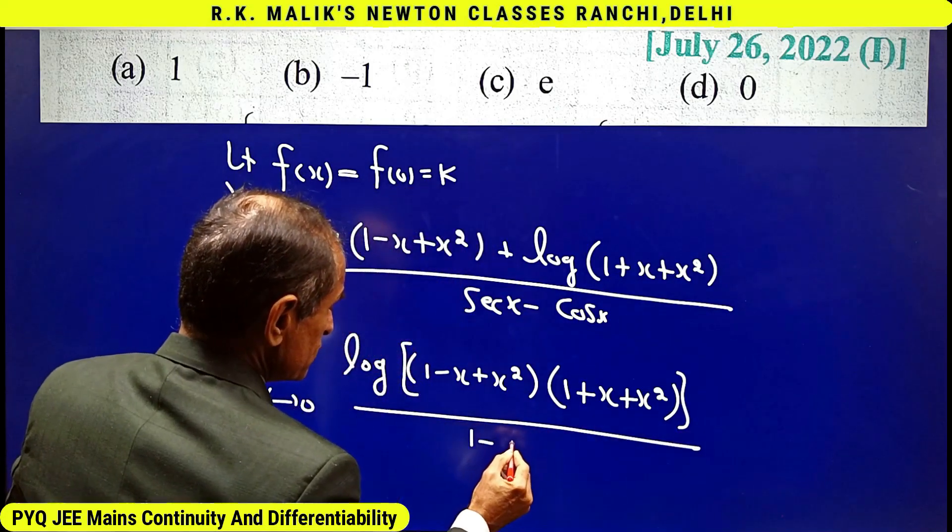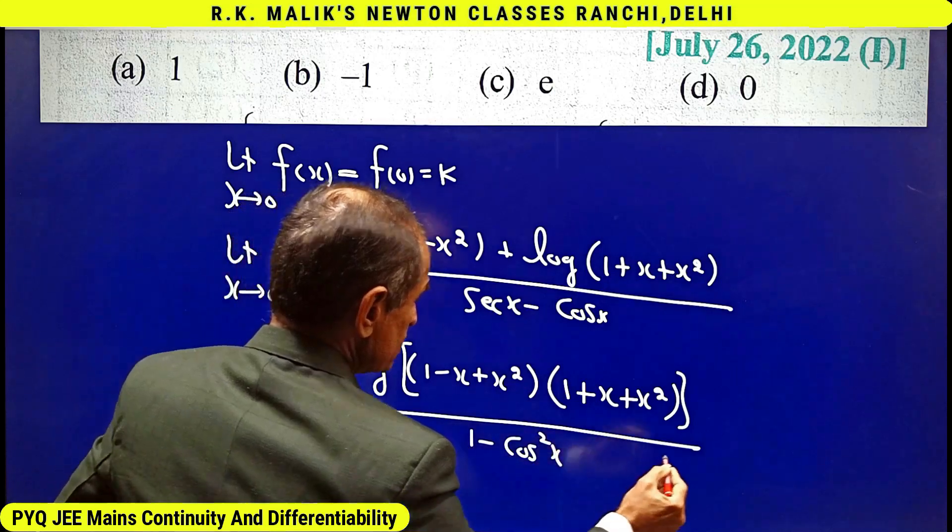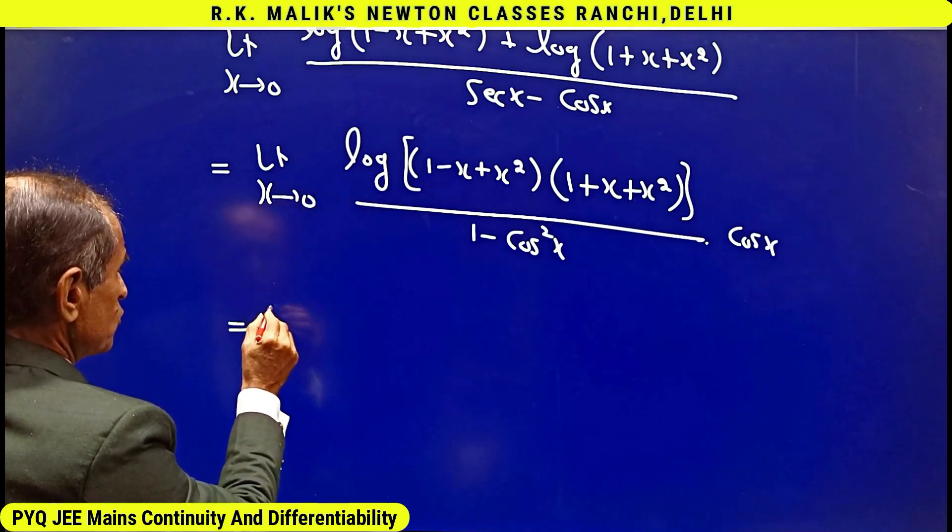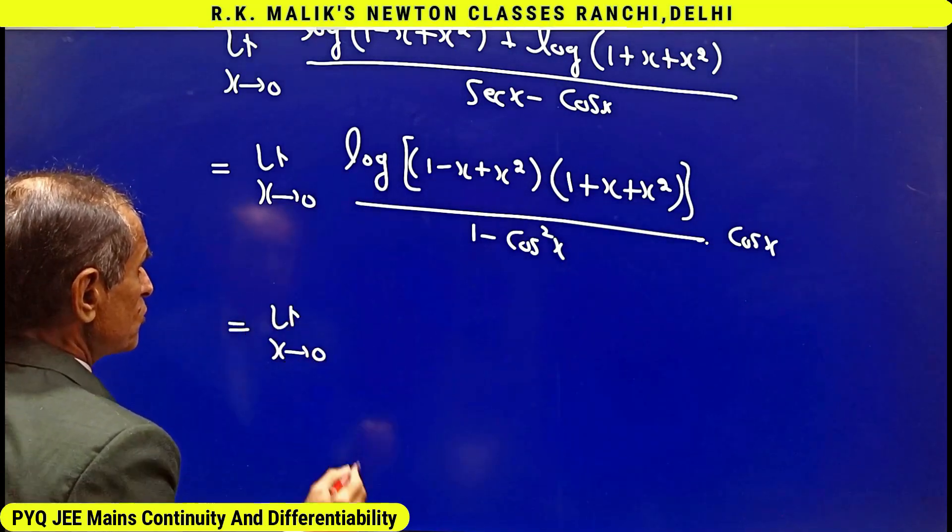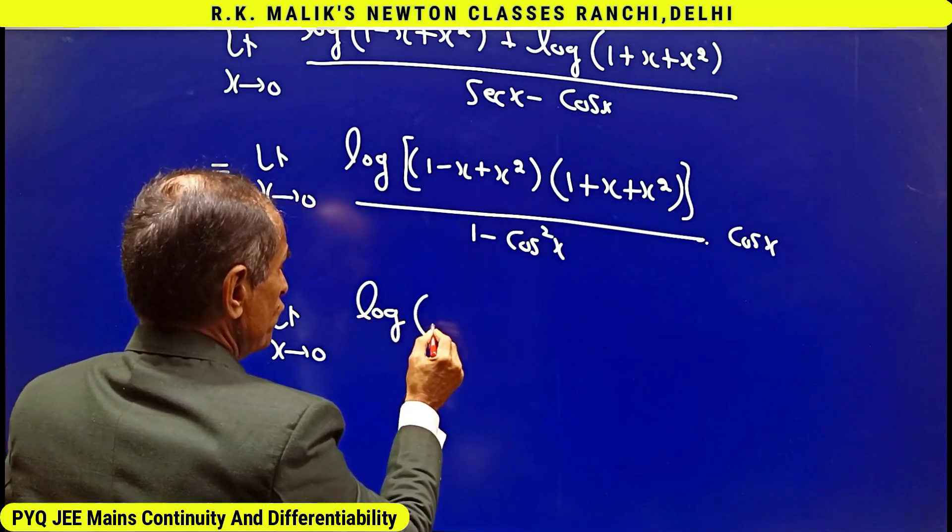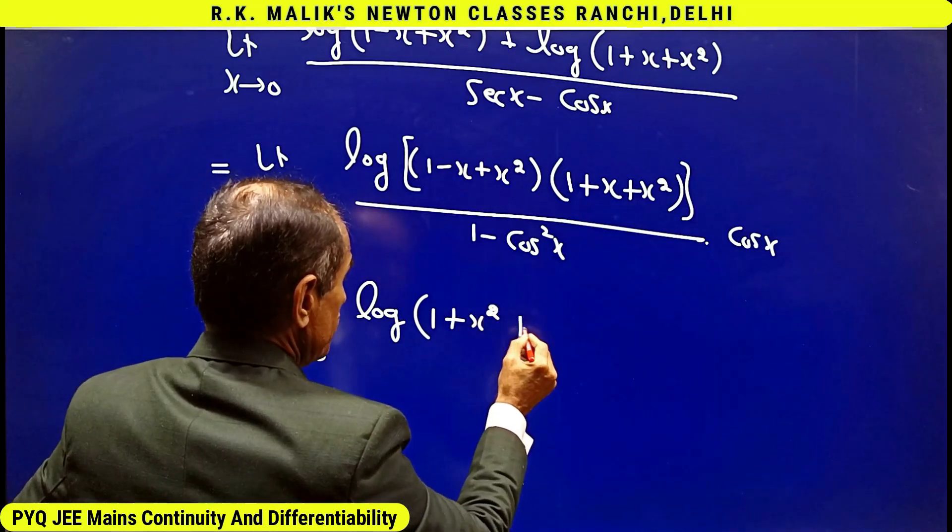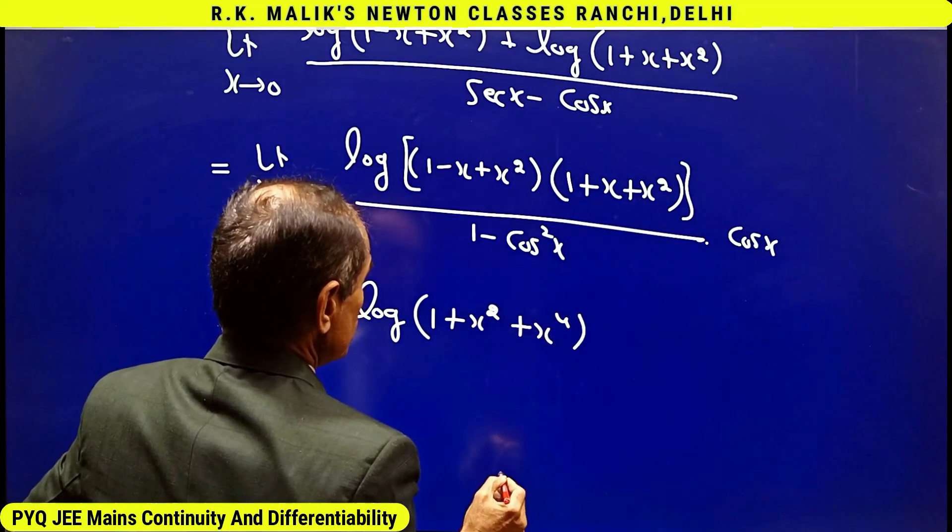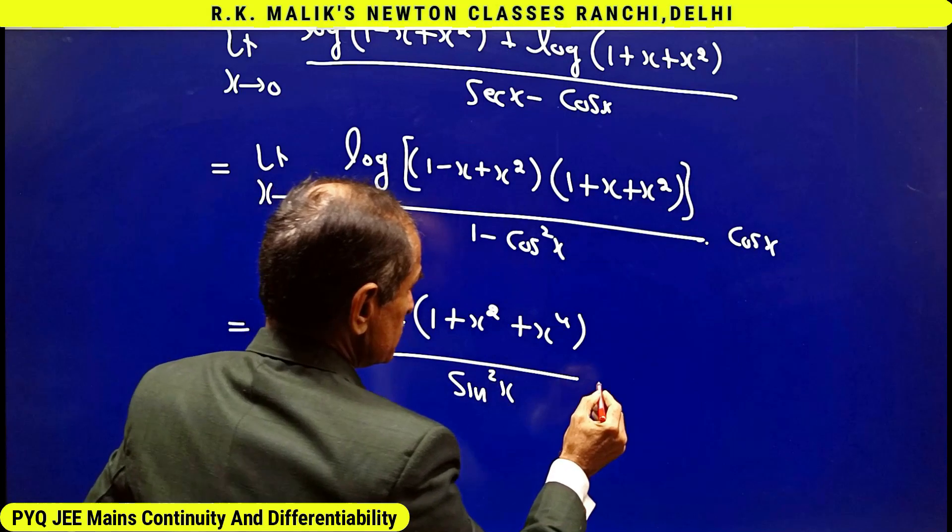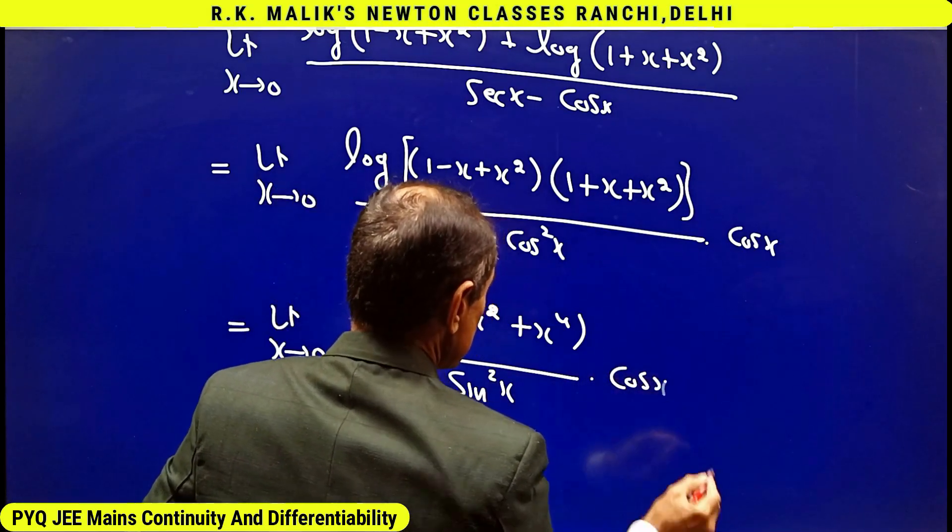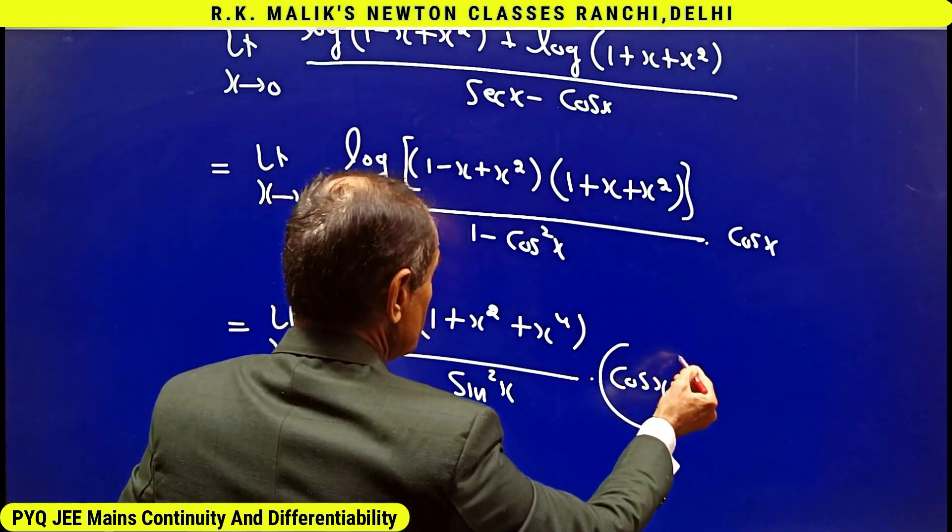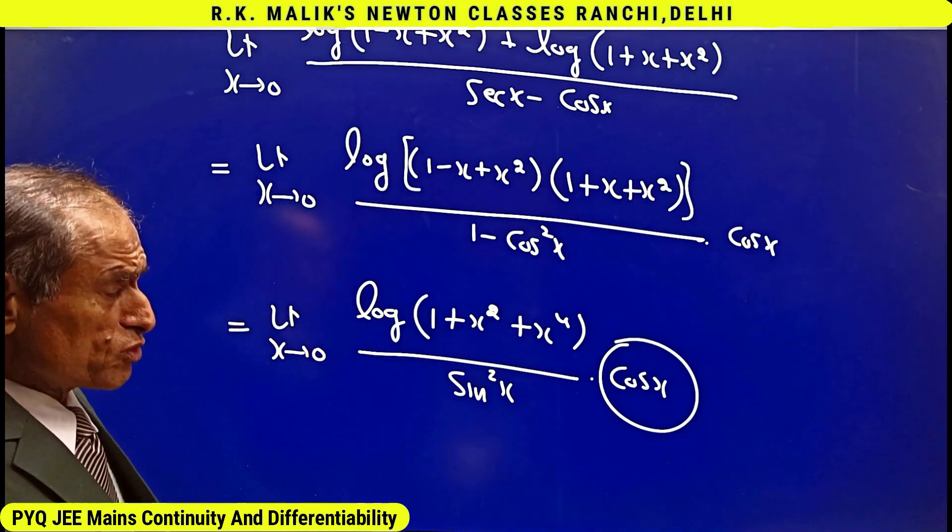Upon (1 - cos²x) times cos x, this is equal to limit x tends to zero. As 1 minus cos x tends to zero, this part has the limit one, and we know that